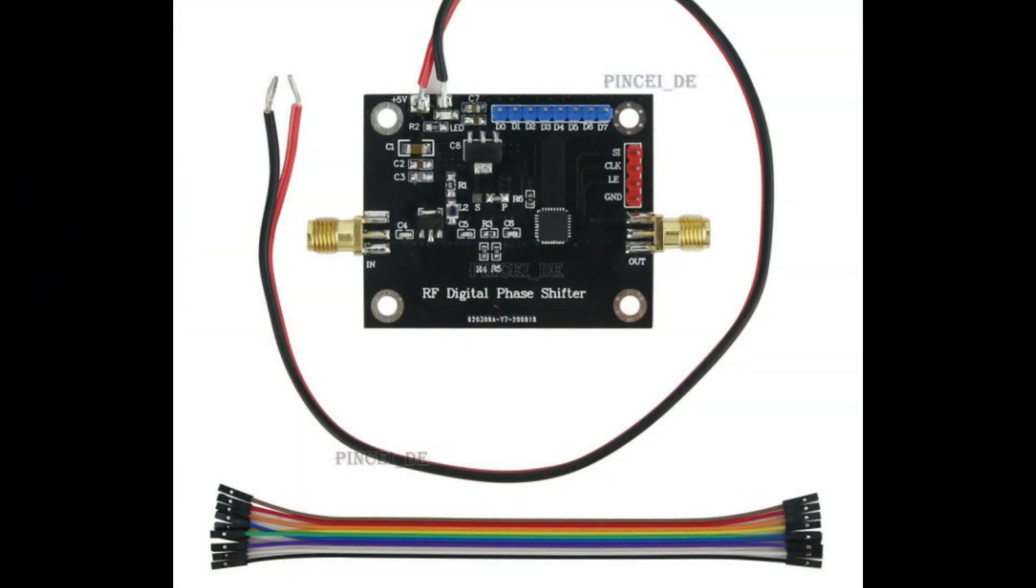Okay, I had a viewer ask me a question about some devices on eBay. They're about $35 to $40, something like that. And they are a device that can change the phase of a signal. And these devices on eBay are 8-bit digitally programmable. So you have 256 steps of phase change.